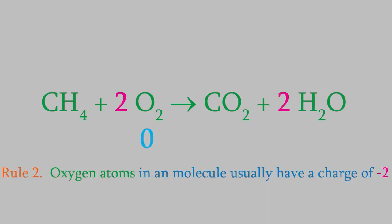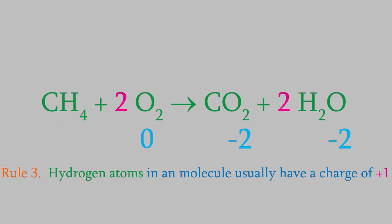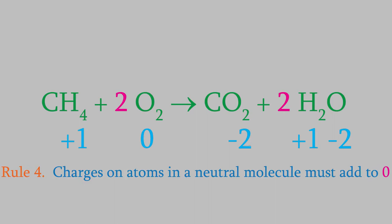By rule two, oxygens in a molecule have a charge of minus two. So the oxygens in the CO2 and in the water have a charge of minus two. Rule three tells us that hydrogens in a molecule have a charge of plus one. So the hydrogens in the methane and the water have a charge of plus one. And last, rule four tells us that the charges on atoms in a neutral molecule must add up to zero. So the carbon in CH4 must have a charge of minus four. And the carbon in CO2 must have a charge of plus four.